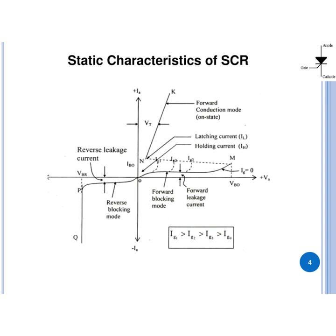Latching current is measured when SCR goes from blocking state to the conduction state, which is nothing but the turn-on process of SCR. While holding current is measured when SCR is already in the conduction state and it goes into the blocking state. If you measure both values, holding current is always less than the latching current.